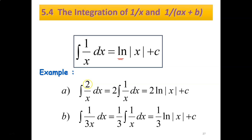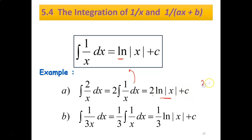Let's see the example: integrate 2 over x dx. So 2 is a constant — put it at the front. You have 2 times integrate 1 over x dx. That is the same as the rule above. When you integrate 1 over x dx you get ln|x| plus c. The 2 only multiplies the first term — you don't have to write 2c. Just write it as a single c.